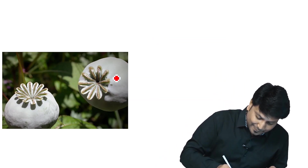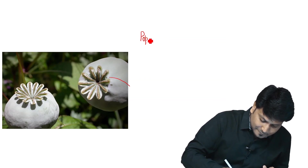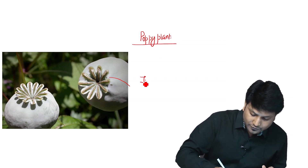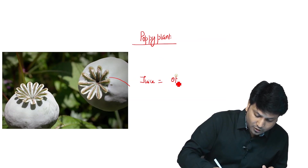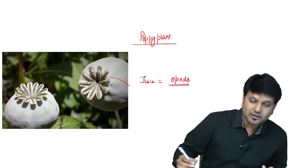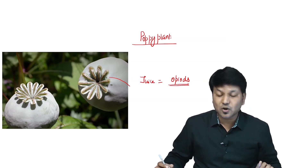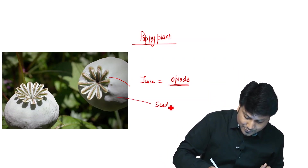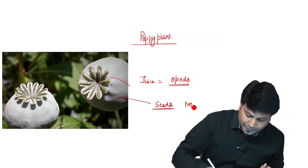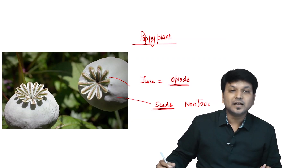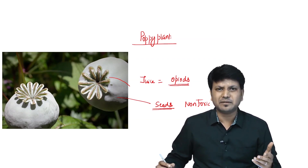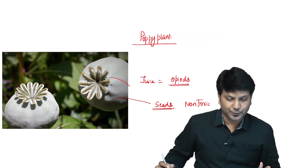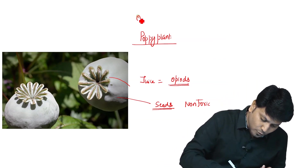What we are seeing is a capsule — this is the capsule of the poppy plant, the opium plant. We have many natural opioids. Remember, this is Papaver somniferum, nothing but your opium plant.